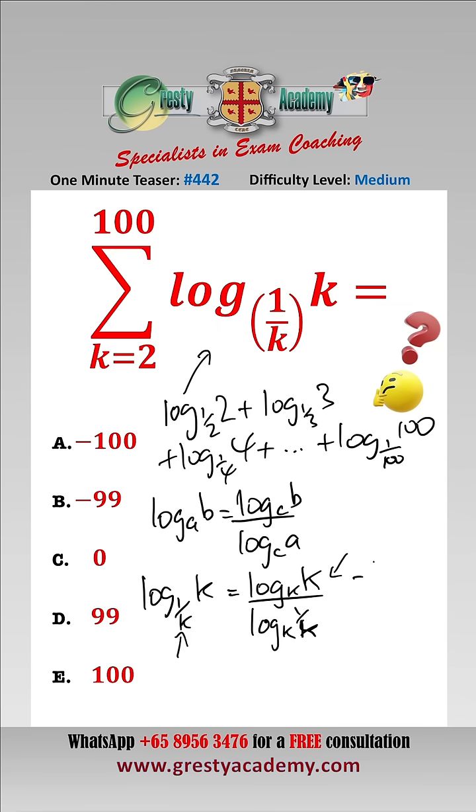Now log to the base k of k equals one, and log to the base k of one over k equals log to the base k of one minus log to the base k of k, which equals zero minus one, which equals negative one.